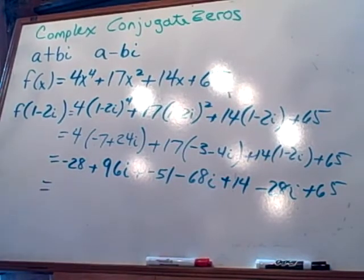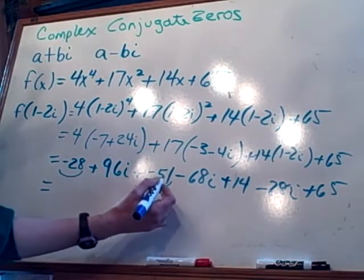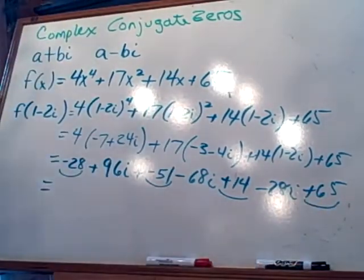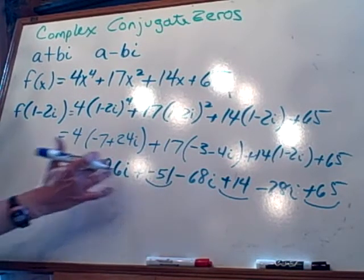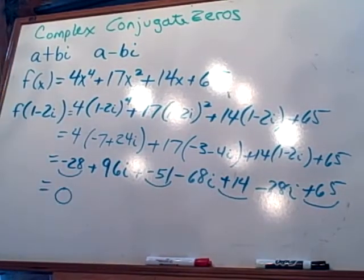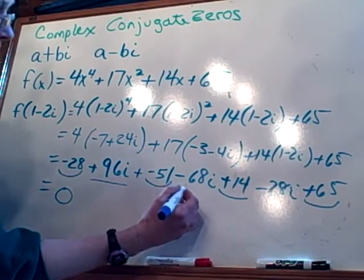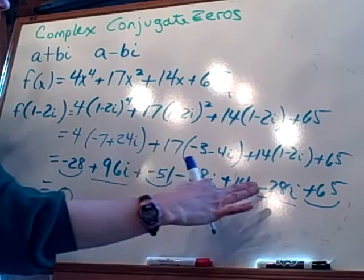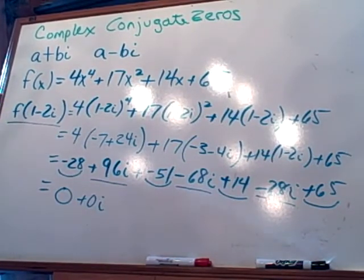Now what I'm going to do is combine all my like terms. Let's do the real portion first. I have negative 28, negative 51, positive 14, and positive 65. Negative 28 plus negative 51 plus 14 plus 65 all equals zero. Now the i's: I have 96, minus 68, minus 28. That gives me 80 and 16, which is 96 — so that's plus zero i. So that means 1 minus 2i is a zero.